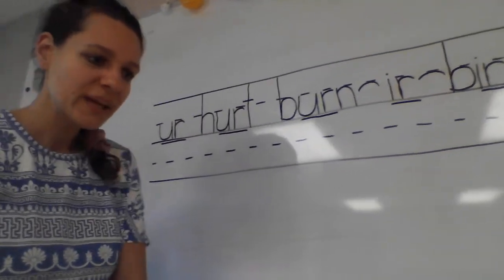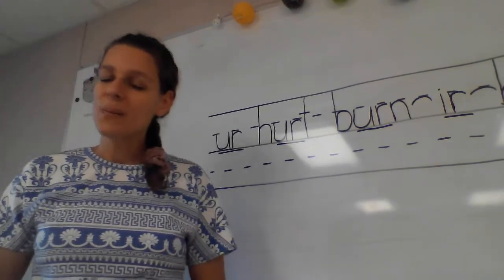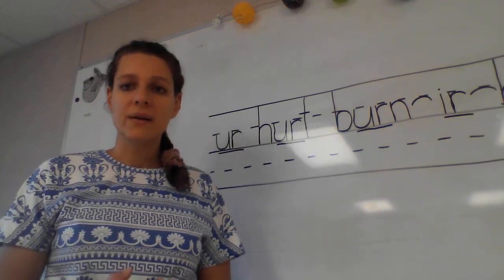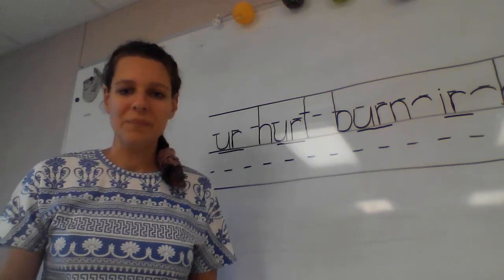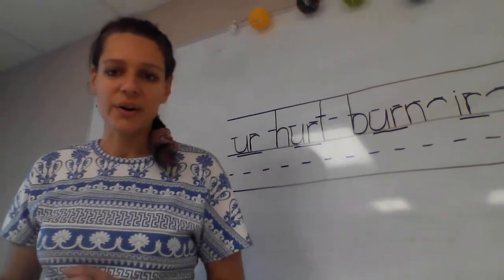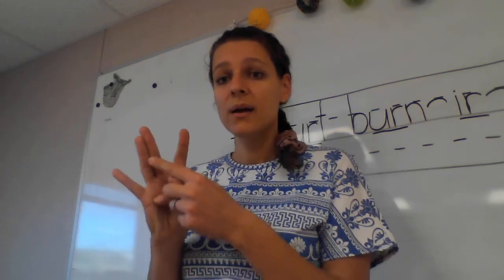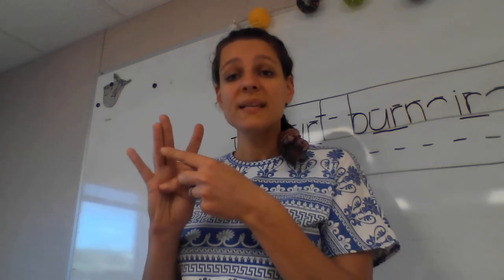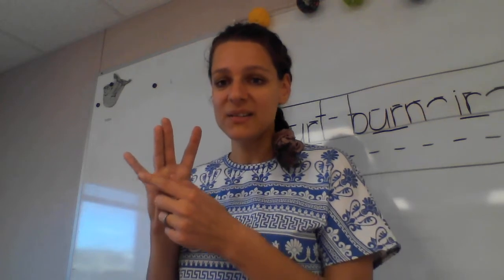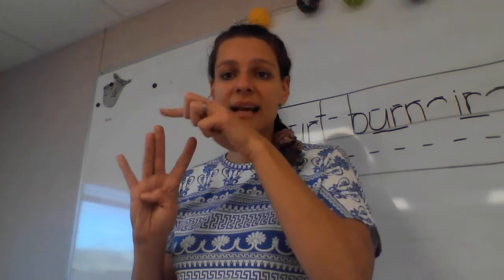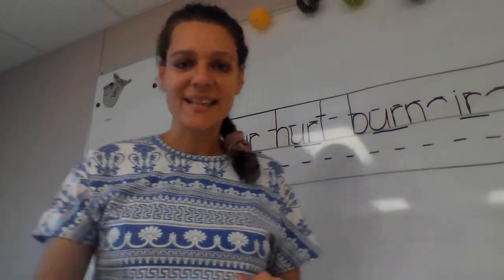We're going to write one more word with er, the er of bird, and that is the word girl. What's our word? Girl. My brother's baby is a girl. What sounds do you hear in the word girl? The sounds are g, er, but this er is er, the er of bird. So before you write it, tell me the sounds you're going to write. And which er? Er, the er of bird.